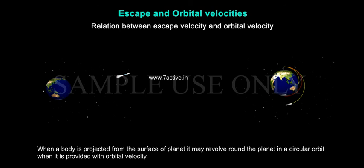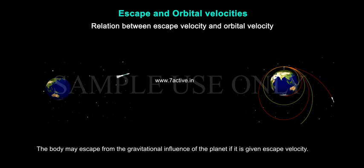When a body is projected from the surface of a planet, it may revolve around the planet in a circular orbit when it is provided with orbital velocity. The body may escape from the gravitational influence of the planet if it is given escape velocity.